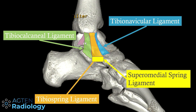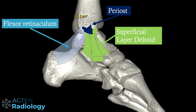So this is just a summary. Here we have the superficial layer with three components, and these components are basically inserting onto the medial malleolus and blending in with the periost that is covering the bone there. The same thing is happening with the flexor retinaculum, which runs obliquely and also inserts onto the medial malleolus and blends in with the periost. And then here we have this superficial layer of the deltoid ligament.